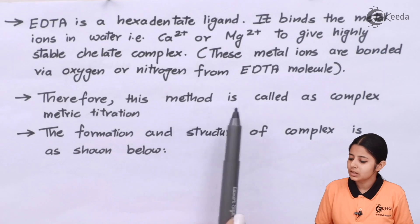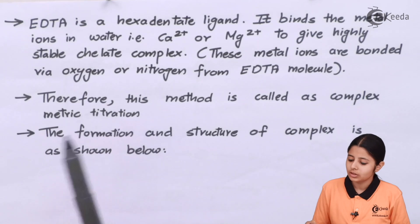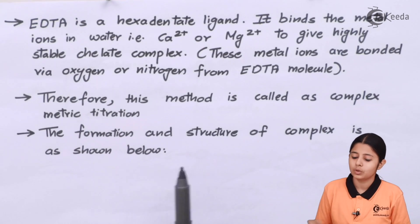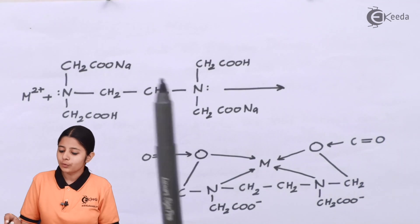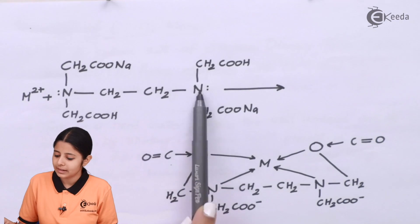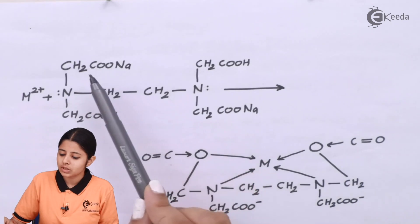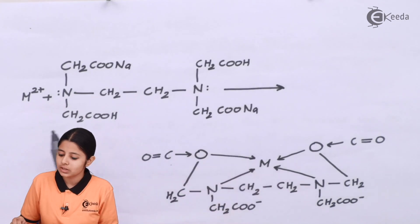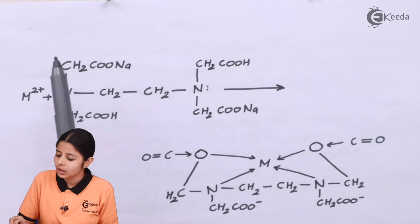Therefore, this method is called complexometric titration. The formation and structure of the complex is shown as below. In the EDTA structure, we have CH2, CH2, N, N — both nitrogens having a lone pair — with CH2COO-Na, CH2COOH, CH2COOH, and CH2COO-Na on the sides. When this reacts with a metal 2+ ion — which can be calcium or magnesium — the nitrogens with their lone pairs will form coordinate bonds with the metal ion.